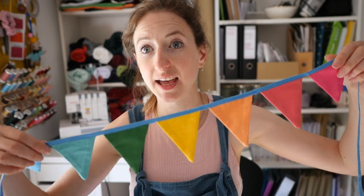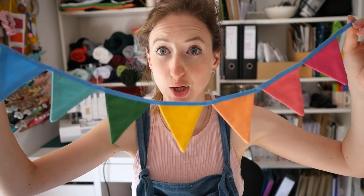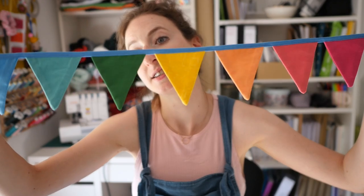Today I have another tutorial for you. This one has been quite highly requested, so we're going to make some bunting today. I have a technique for my bunting where there are no raw edges on show, which makes for a really neat professional finish. It's great for parties, weddings, any occasion, and you can pick whatever fabrics you want. This technique can be used for any size or shape of bunting. I've made some little rainbow flags to go in my window downstairs.